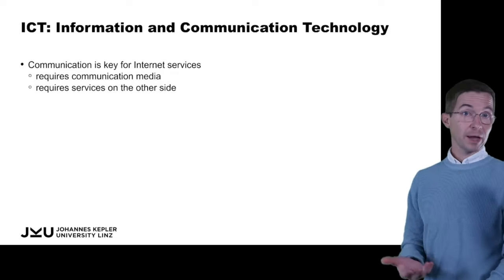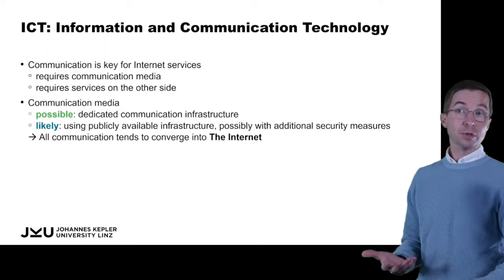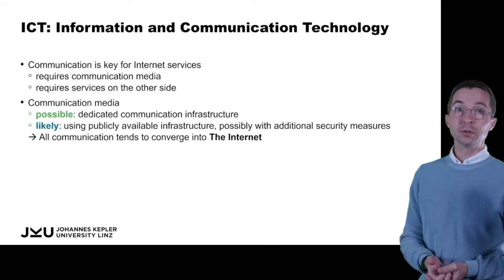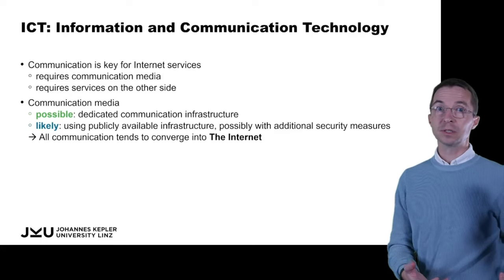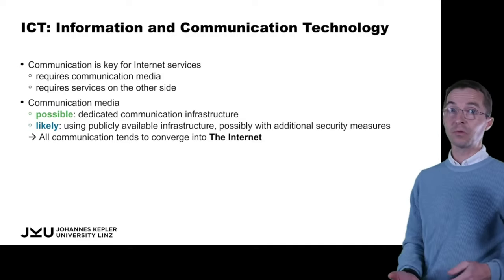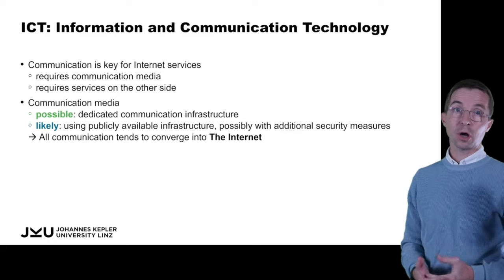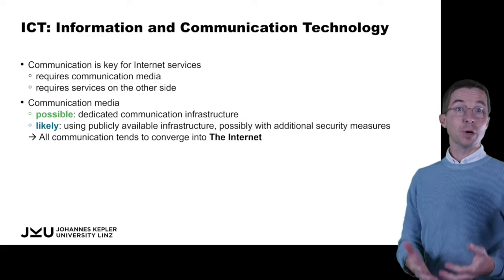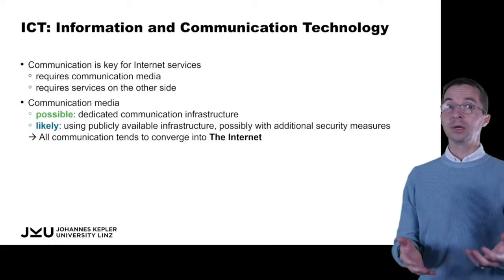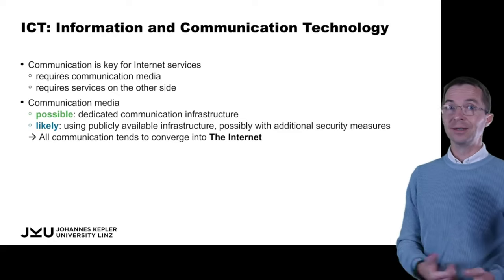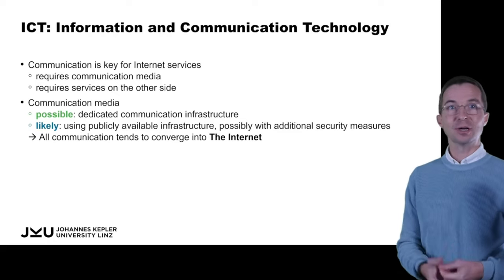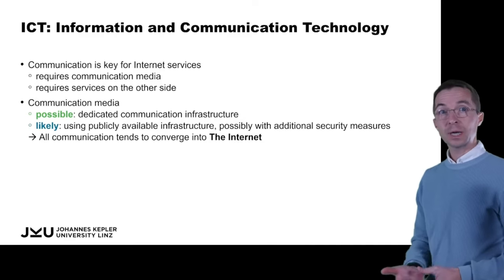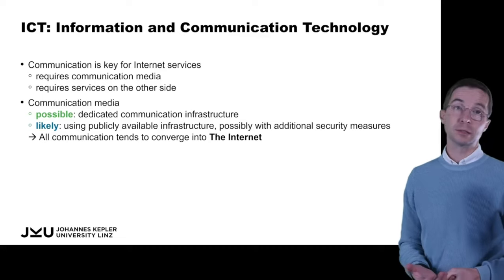For this communication, whatever we're talking about, that requires a medium. It is quite possible that communication could use dedicated infrastructure, like dedicated fiber lines between universities in Austria. But it's much more likely — and more cost-efficient — to use publicly available infrastructure, the internet. There's only one internet, and this is the cheapest, most economically and power-efficient way to communicate with each other.